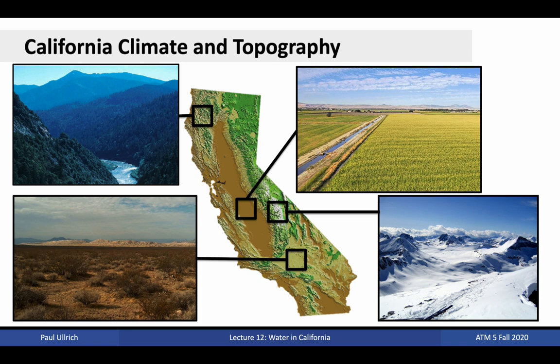California is a big place and wildly diverse. Rainy montane regions in the north give rise to temperate forests. To the east, the high elevation of the Sierra Nevada is responsible for cool temperatures, and is home to much of the state's snowpack. The Central Valley, which stretches across much of the state, is dominated by agricultural activity and cropland, having been filled with nutritious sediments over millions of years of erosion. Finally, southern California largely consists of desert and shrubland, with high temperatures and low precipitation.